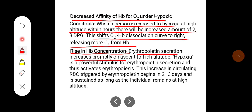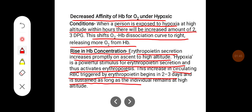Third, there will be a rise in hemoglobin concentration. Erythropoietin secretion increases promptly on ascent to high altitude. Hypoxia is a powerful stimulus for erythropoietin secretion and thus activates erythropoiesis. This increase in circulating RBCs triggered by erythropoietin begins 2 to 3 days and is sustained as long as the individual remains at high altitude.